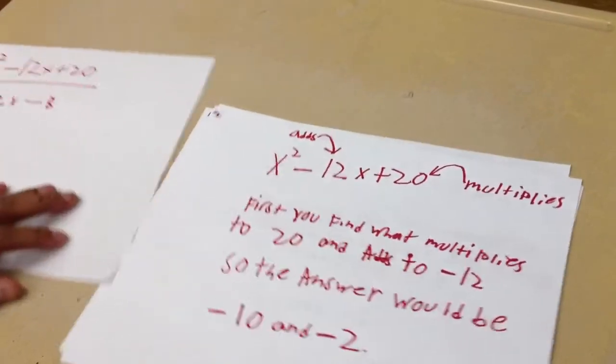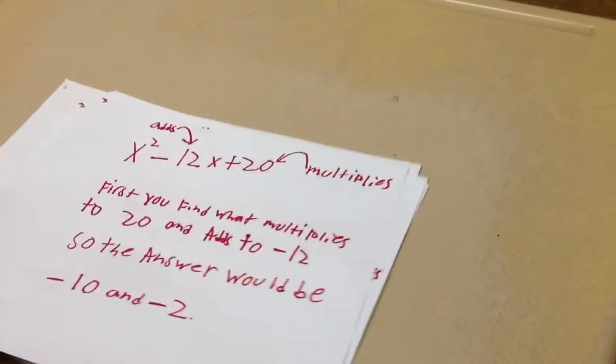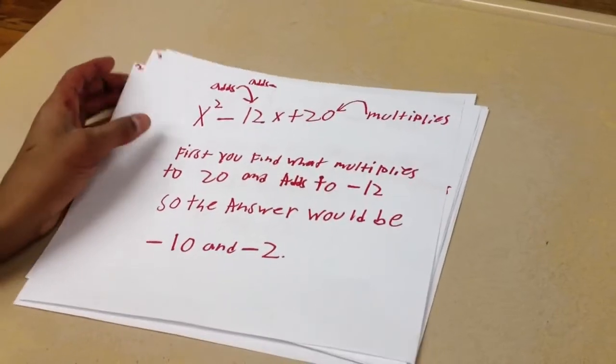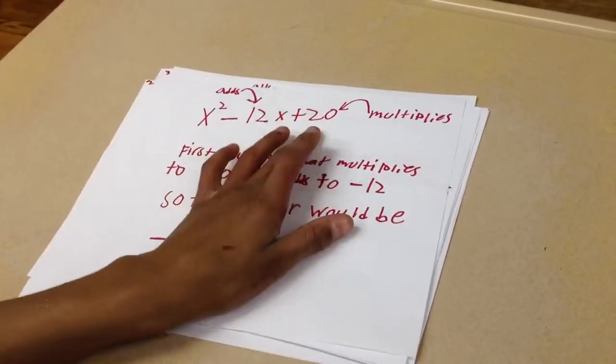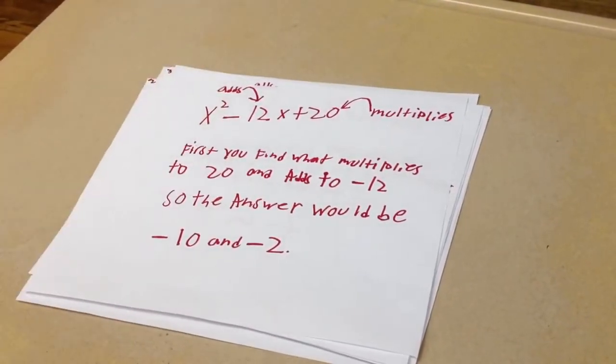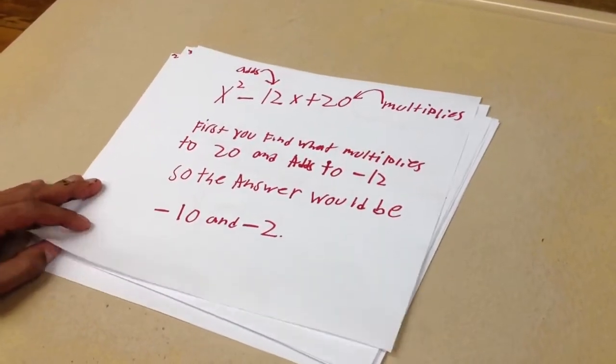We'll start with the numerator, that's the top of the fraction. To factor this, we need to figure out what multiplies to 20 and adds to negative 12. And that would, of course, be negative 10 and negative 2.